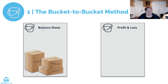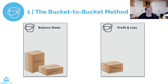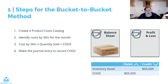The bucket-to-bucket method involves calculating your cost of goods sold outside of QuickBooks and then making a journal entry to move the balance. Here are the steps: Number one, create a product cost catalog. Number two, identify your cost by SKU for the month. Number three, look at those costs by SKU and multiply by the quantity sold to get your cost of goods sold. Number four, make the journal entry to record COGS at the end of each period. The inventory asset is credited and the cost of goods sold is debited.